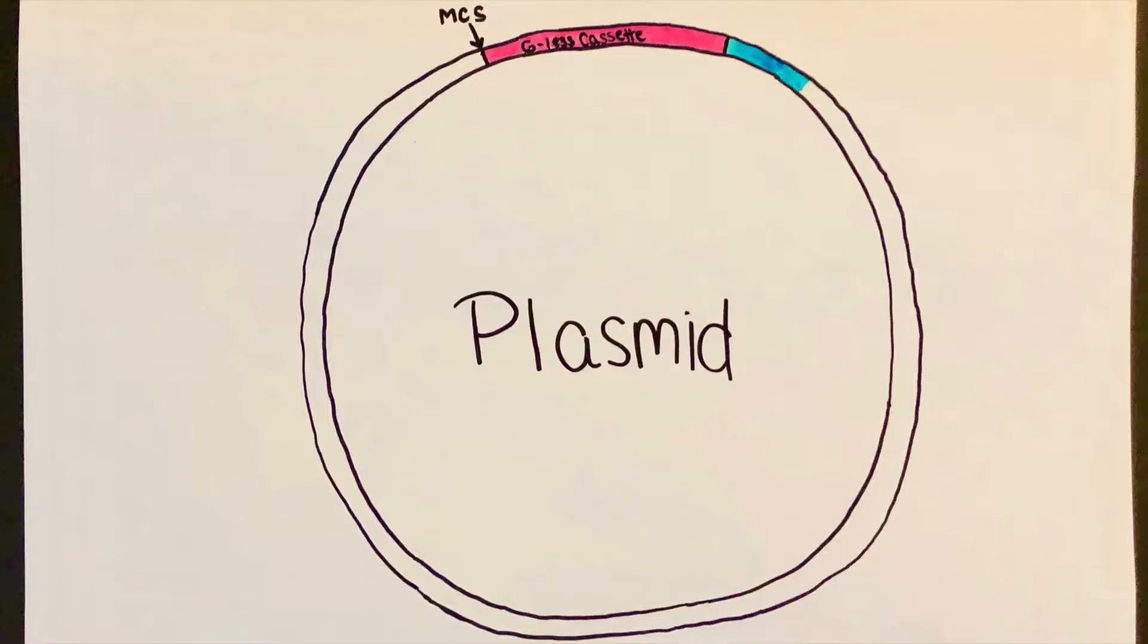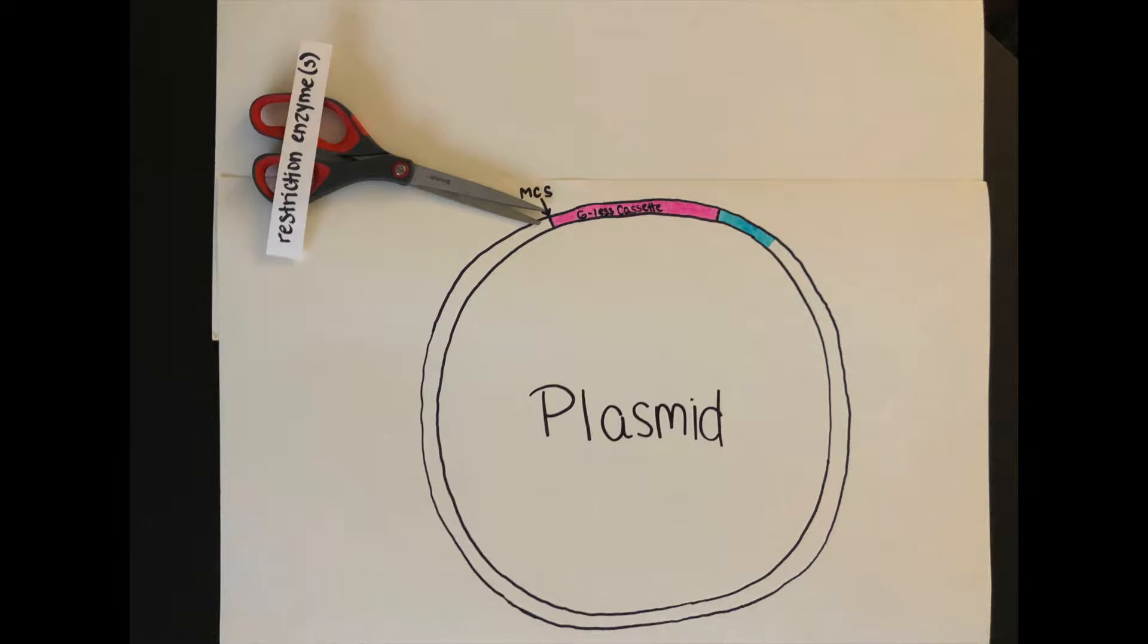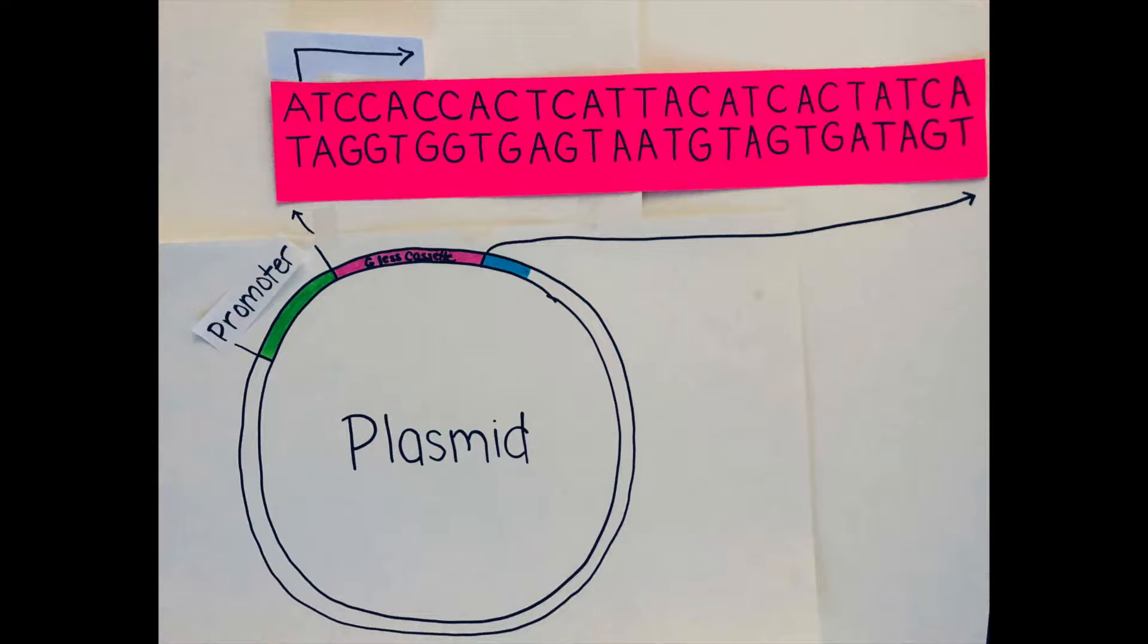I will lay out an overview of how it works. First, we incorporate a promoter into a pre-constructed plasmid. This promoter will be located just upstream relative to the G-less cassette, a stretch of nucleotides lacking guanine. Now, let's set up a G-less cassette reaction so you can understand how it measures the amount of transcription.